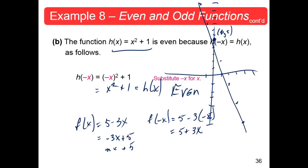Unfortunately, we've finished section 1.5. Any questions? Let's look at the vocabulary at the top of the 1.5 exercises. Number 1: the vertical line test is used to determine whether the graph of an equation is a function of y in terms of x — it has to cross only once. Number 2: the zeros of a function f are the values of x for which f(x) = 0.